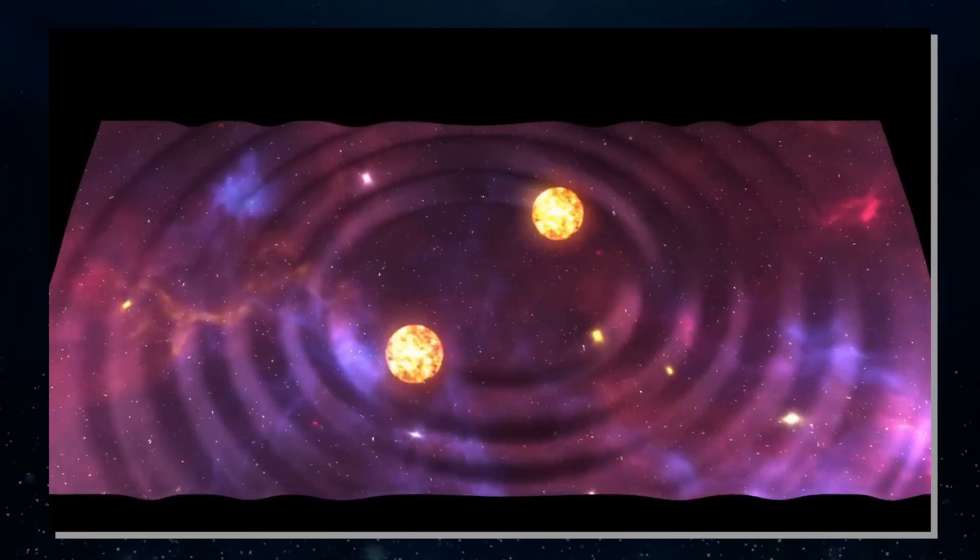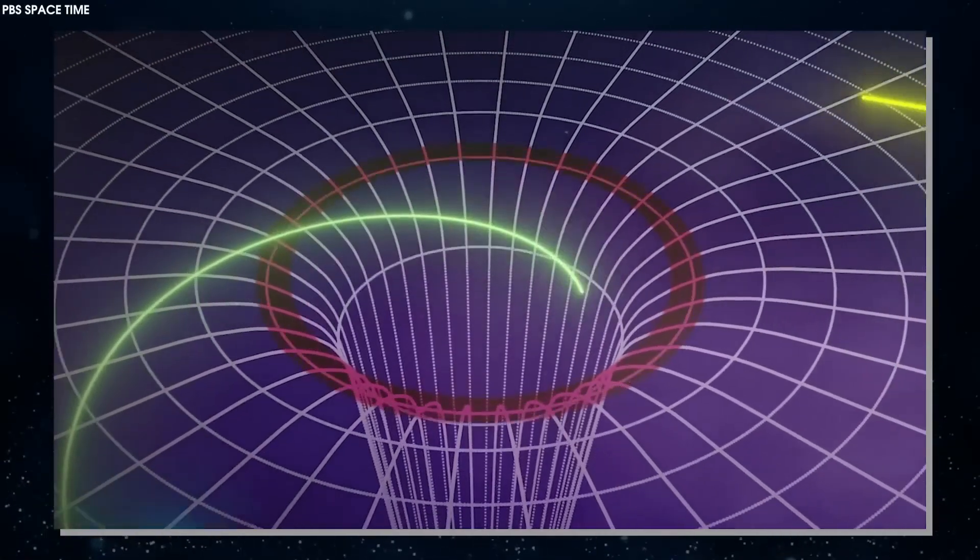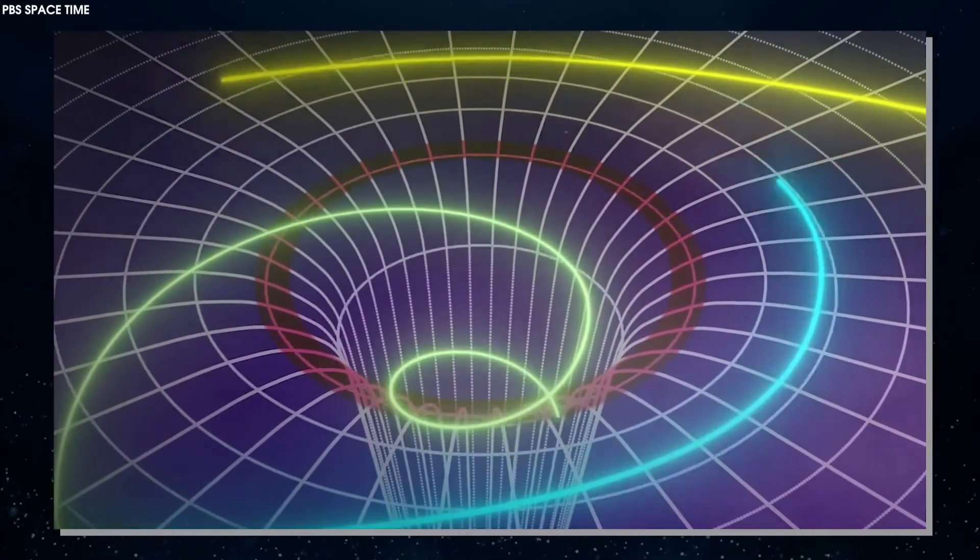And since the small Magellanic Cloud has a similar environment to galaxies during cosmic noon, it's possible that rocky planets could have formed earlier in the universe than we might have thought.